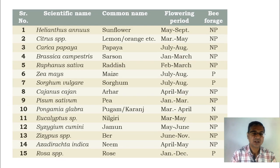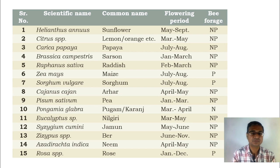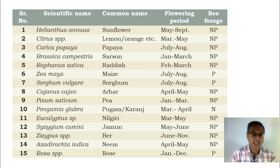Along with those three seasons, another season is also applicable — a minor dearth period, which is often experienced between the minor and the major honey flow seasons. This is a table where we can observe that on the basis of the survey, we take a chart that includes the scientific name of the plant, common name of the plant, flowering period, and the bee forage — from which the honeybees collect nectar, pollen, or both. Some of the plants included are sunflower, papaya, sarso, and a number of agricultural plants up to roses.